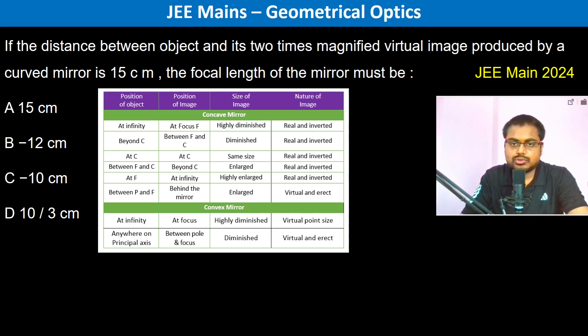The distance between an object and its two times magnified virtual image produced by a curved mirror is given. So it's not specified which concept mirror - convex mirror or concave mirror, we don't know.